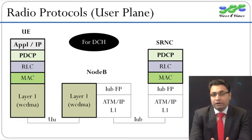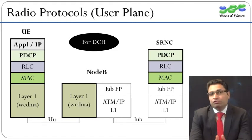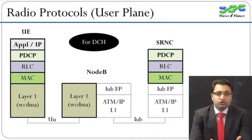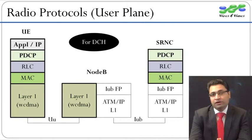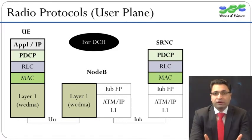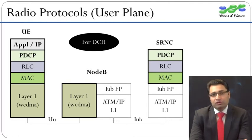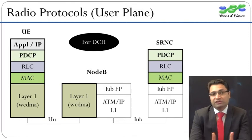The decisions made by the MAC layer are implemented by the physical layer. The physical layer performs channel coding, interleaving, spreading, scrambling, modulation, and finally transmits data on the Layer 1 air interface using WCDMA slots and radio frames. It also adds CRC bits which help the UE detect whether the data has been correctly received or not.